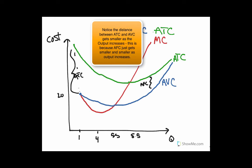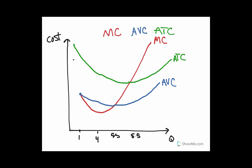Average fixed cost doesn't usually have an actual curve drawn for it, so it's usually not represented. But if we did draw it, it would start high and then just go down to 0 in the limit. What the average total cost essentially is, is average variable cost plus average fixed cost. As average fixed cost gets smaller and smaller, the average variable cost gets way closer to the average total cost as quantity increases.